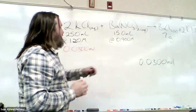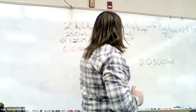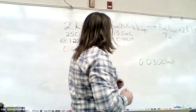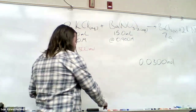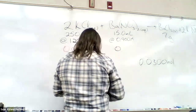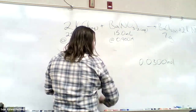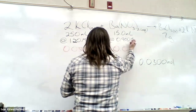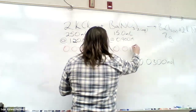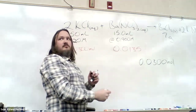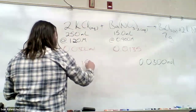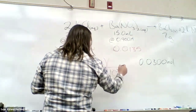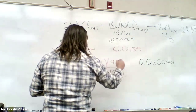We do the same process for the other reactant. 15.0 mL times 0.900 molar gives us 0.0135 moles of barium nitrate.